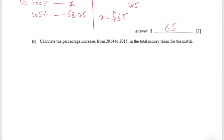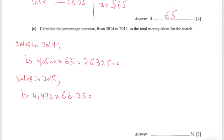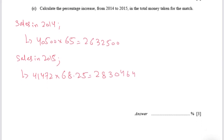Calculate the percentage increase from 2014 to 2015 in the total money taken for the match. The tickets sold in 2014 were 40,500. Multiplying by the ticket price of $65, we get total sales of $2,632,500. For 2015, the tickets sold were 41,472. Multiplying by $68.25, we get sales of $2,830,464, which is the revenue in 2015.